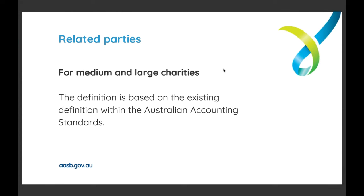Joe, are you able to give us some insights into what a related party is? A related party is someone who's connected to a charity and who could influence the charity. For small charities — those with an annual revenue under $500,000 — the focus is around what we call significant influence. For medium and large charities with revenue over $500,000, the definition is based on the Australian Accounting Standards, or AASB, with additional considerations such as control or joint control. You can find more details on both the ACNC and AASB websites.